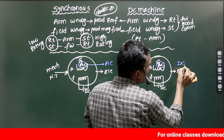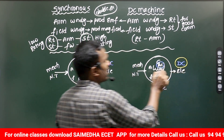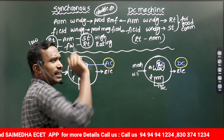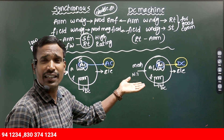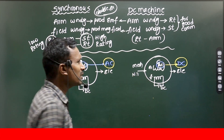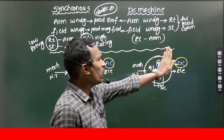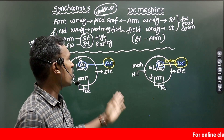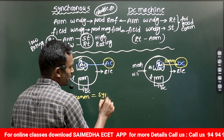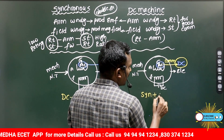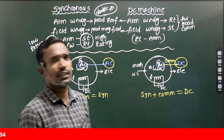In the DC generator, the armature EMF is AC but the output is DC. How? The AC is converted into DC by the commutator. The commutator is the heart of the DC machine. If there is no commutator, the AC would come directly to the output, which is essentially a synchronous machine. So, synchronous machine is nothing but DC machine minus the commutator. And DC machine is synchronous machine plus the commutator. This is another key difference between the two.